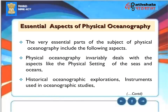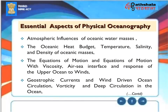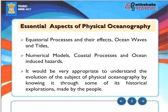Essential aspects of physical oceanography include the following: the physical setting of the seas and oceans, historical oceanographic explorations, instruments used in oceanographic studies, atmospheric influences of oceanic water masses, the oceanic heat budget, temperature, salinity and density of oceanic masses, the equations of motion and equations of motion with viscosity, air-sea interface and response of the upper ocean to winds, geostrophic currents and wind-driven ocean circulation, vorticity and deep circulation in the ocean, equatorial processes and their effects, ocean waves and tides, numerical models, and coastal processes and ocean-induced hazards.